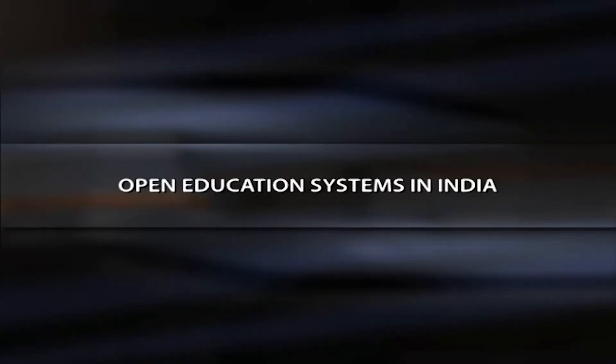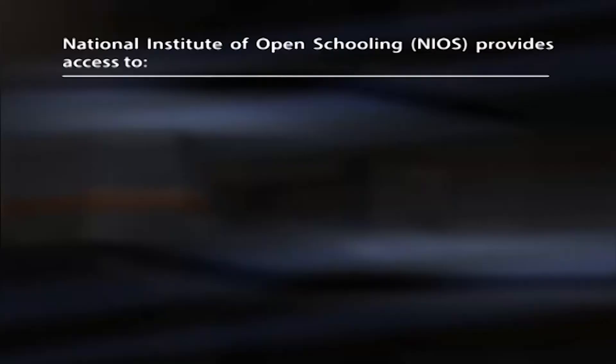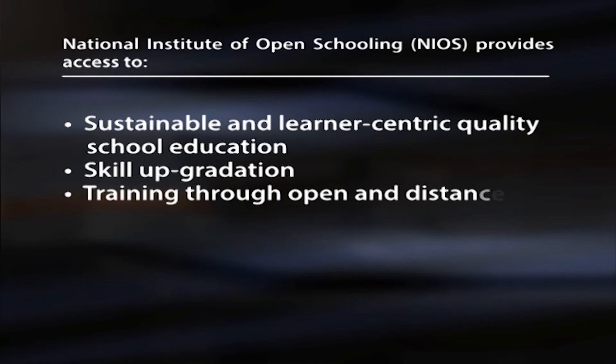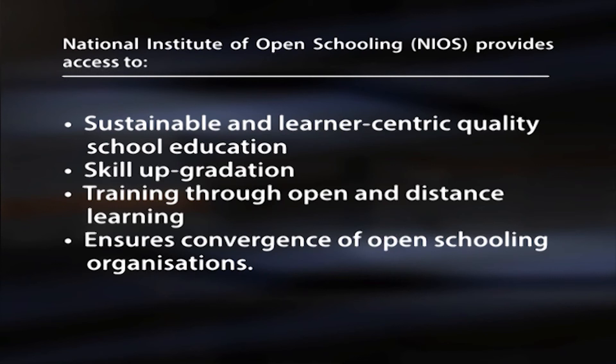India developed an open and distance education system both at school and higher education levels to provide educational opportunities to a larger segment of the population. In 1979, a project was started by the country's Central Board of Secondary Education (CBSE), which has now taken the shape of the National Institute of Open Schooling (NIOS). With 1.5 million people enrolled, it is the largest open schooling organization in the world. NIOS provides access to sustainable and learner-centric quality school education, skill upgradation and training through open and distance learning, and ensures convergence of open schools and schooling organizations.